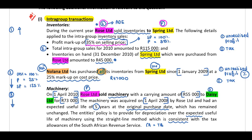Therefore we've identified that our selling price represents 100% and our profit 35%. Total intra-group sales for 2010 amounted to 215,000, which we need to eliminate. Inventories on hand at 31 December 2010 of Spring Limited purchased from Rose amounted to 45,000. We need to: first, eliminate the intra-group transaction of 115,000; second, eliminate the unrealized profit — this profit is in the records of Rose as Rose sold the inventory, affecting the analysis of owner's equity of Rose; and third, remember the tax on the unrealized profit.